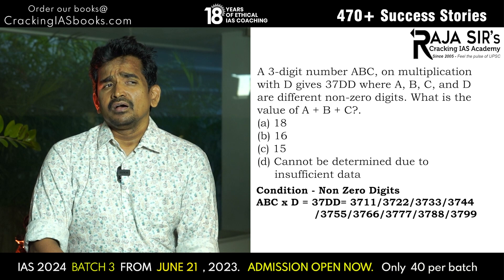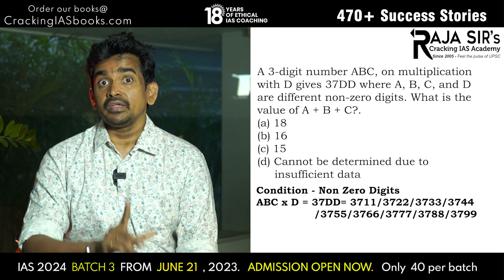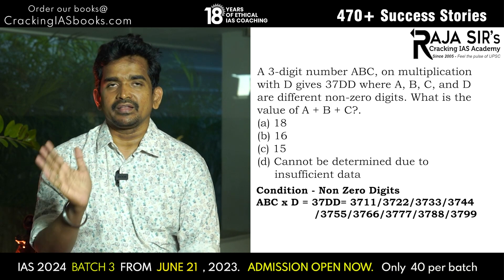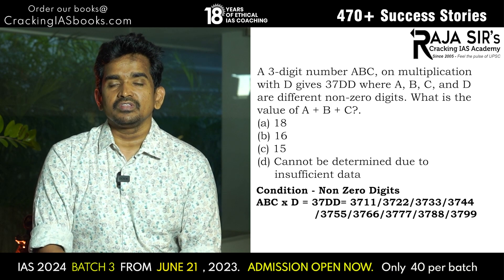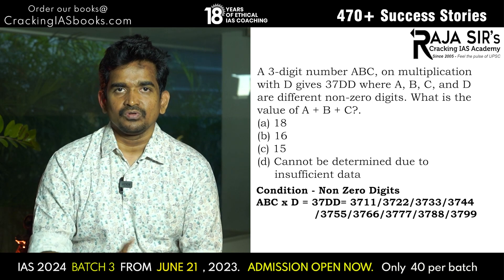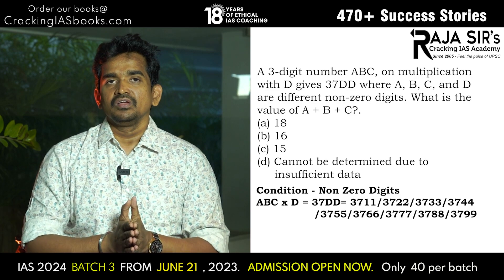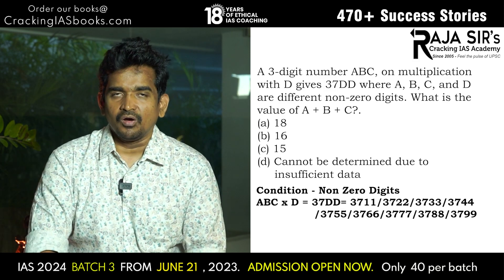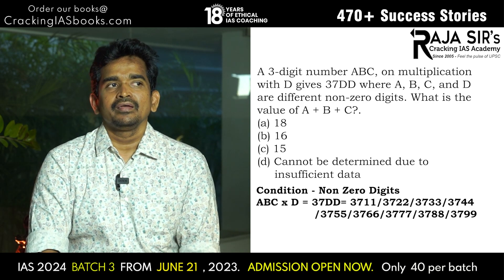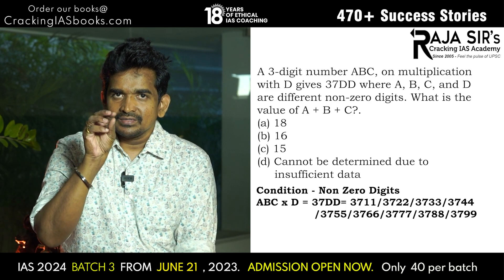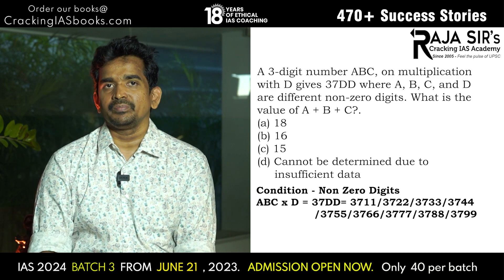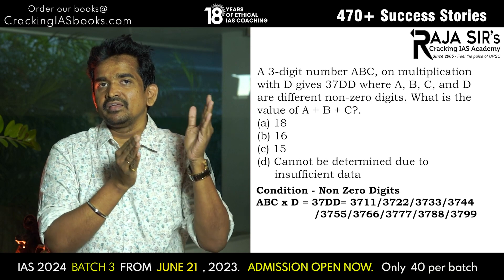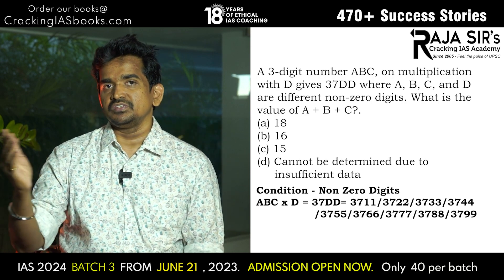On the left-hand side, there is a 3-digit number ABC multiplied by a single digit D giving 37DD. Let's check: 800×5 = 4000 — cannot be. 800×4 = 3200 — cannot be. 900×4 = 3600, which is very close. 900×5 = 4500, which exceeds 37DD. So we fix on the range around 900×4 = 3600, and check which value fits the condition ABC×D = 37DD.